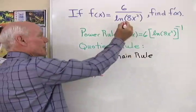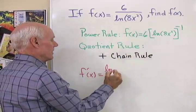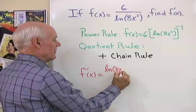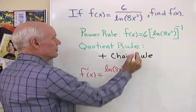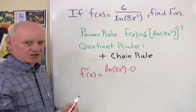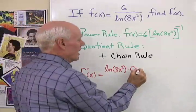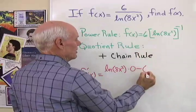will be the denominator, natural log 8x squared, times the derivative of the numerator. Well, the derivative of 6 is just going to be 0, minus the numerator, 6,